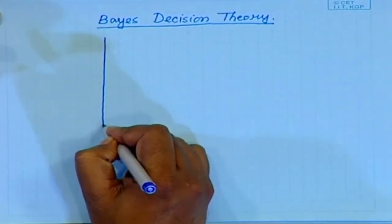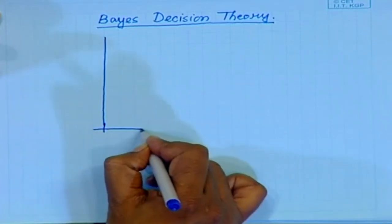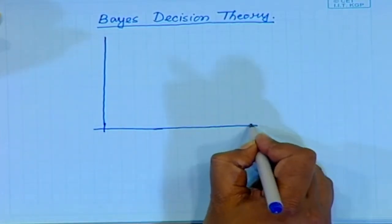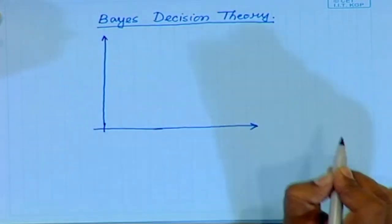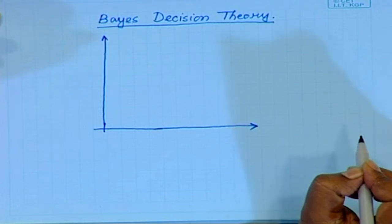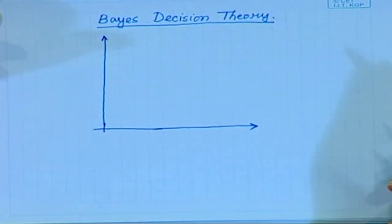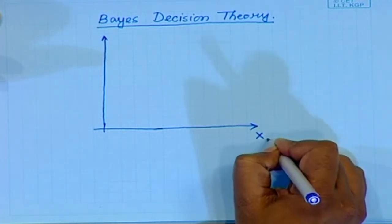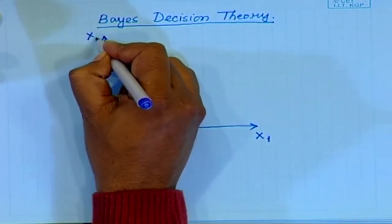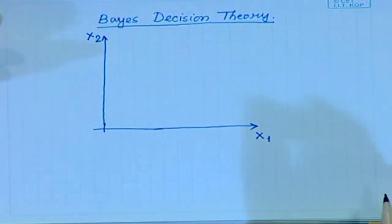I am using a two-dimensional example for illustration because I can easily plot what happens in two dimensions. As dimensionality increases, the complexity also increases and I cannot plot them on a two-dimensional plane. Suppose my two-dimensional feature vector has two components, x1 and x2 — these are the two components of my feature vector.